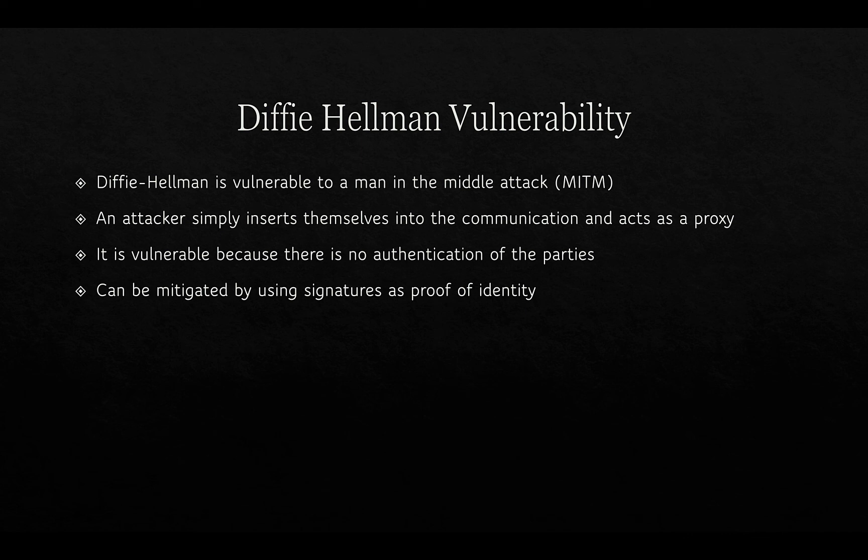However, Diffie-Hellman is vulnerable to a man-in-the-middle attack, where an attacker inserts themselves into the communication and acts as a proxy. Alice thinks she's communicating with Bob but is actually communicating with Eve. Eve passes information on to Bob and vice versa, intercepting all communication and determining keys for both parties. This is why proof of identity between the parties can help detect when a man-in-the-middle attack has taken place, but it remains a very common attack even today.